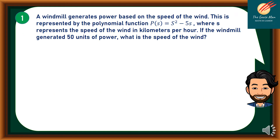Let's consider problem number one. A windmill generates power based on the speed of the wind. This is represented by the polynomial function p(s) = s² − 5s, where s represents the speed of the wind in kilometers per hour. If the windmill generates 50 units of power, what is the speed of the wind?